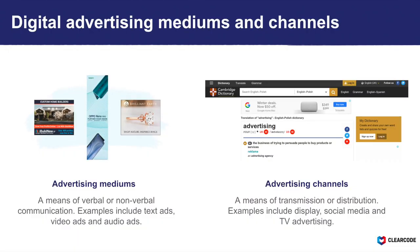In this final section, we'll look at the main digital advertising mediums and channels. An advertising medium is a form of verbal or non-verbal communication and essentially refers to the ad format — examples include text ads, video ads, and audio ads. An advertising channel refers to the place where the ads will be displayed — examples include display, social media, and TV advertising.